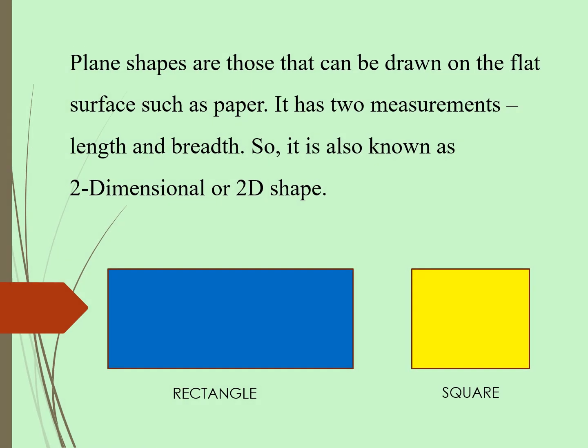Plain shapes are those that can be drawn on the flat surface such as paper. It has two measurements, length and breadth. So it is also known as two-dimensional or 2D shape.